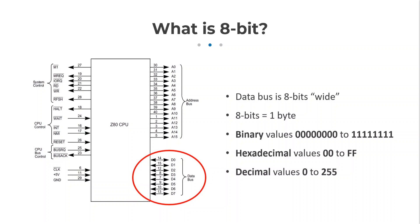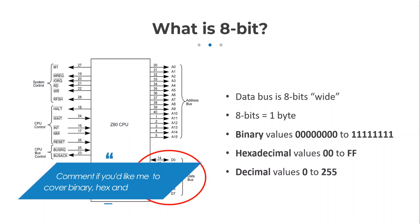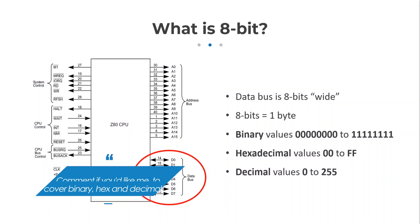And in decimal, we have the minimum value of 0 and the maximum is 255. Converting between binary, hexadecimal, and decimal is not covered in this video, but maybe that's something we can look at in the future. Why not let me know in the comments down below if this is a topic that you would like me to cover.